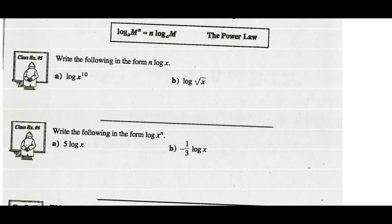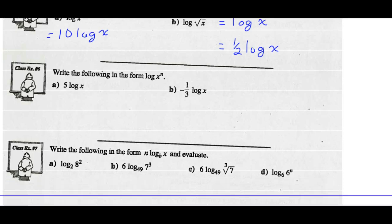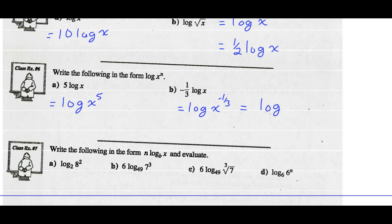Write the following in terms of N log X. The log of X to the exponent 10 is the same as 10 log X — we bring the exponent down front and multiply it by the logarithm. The log of radical X: rewrite that as the log of X to the exponent one-half, then take the exponent out in front — one-half log X. Write the following in the form log of X to the exponent N: 5 log X is the same as log of X to the exponent 5. And negative one-third log X is the same as log of X to the exponent negative one-third, or the log of 1 over the cube root of X.